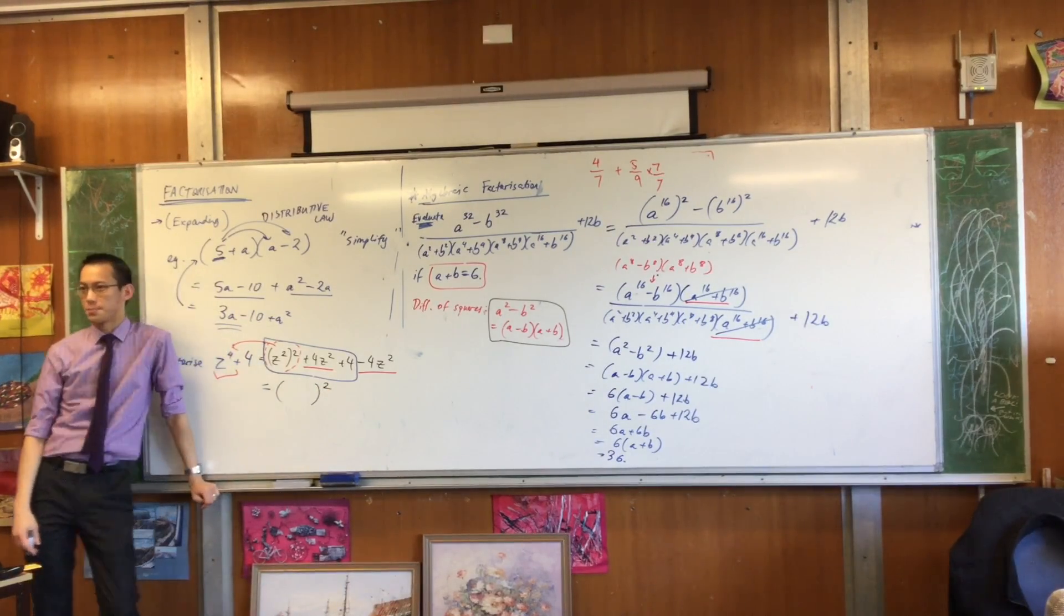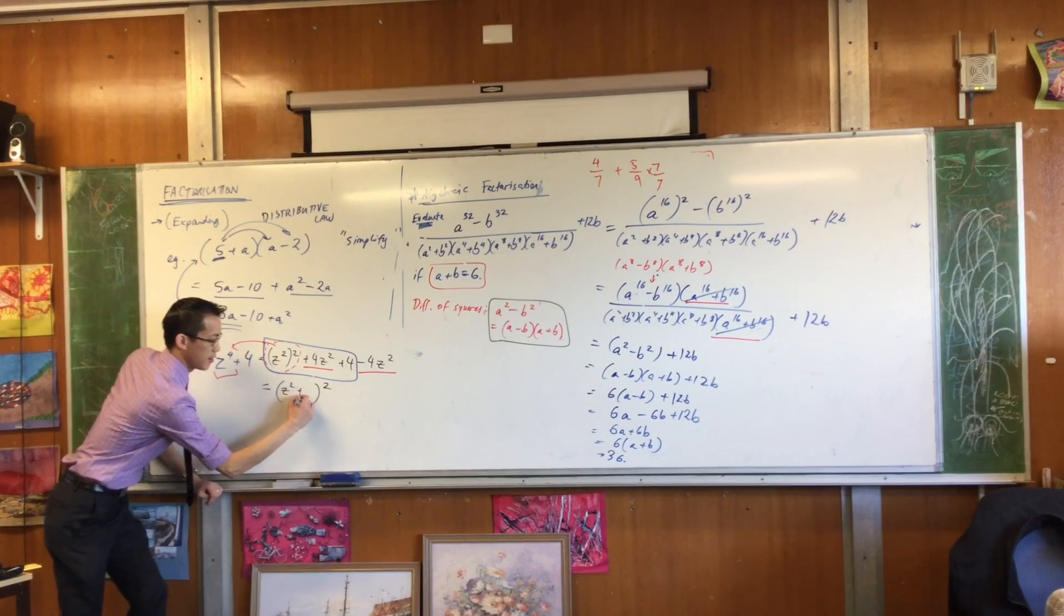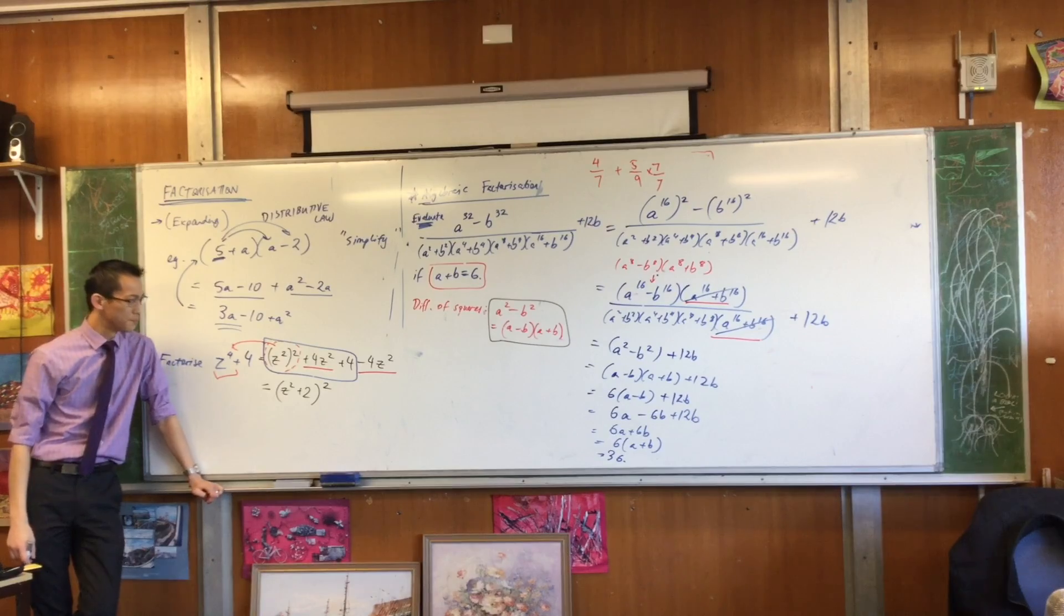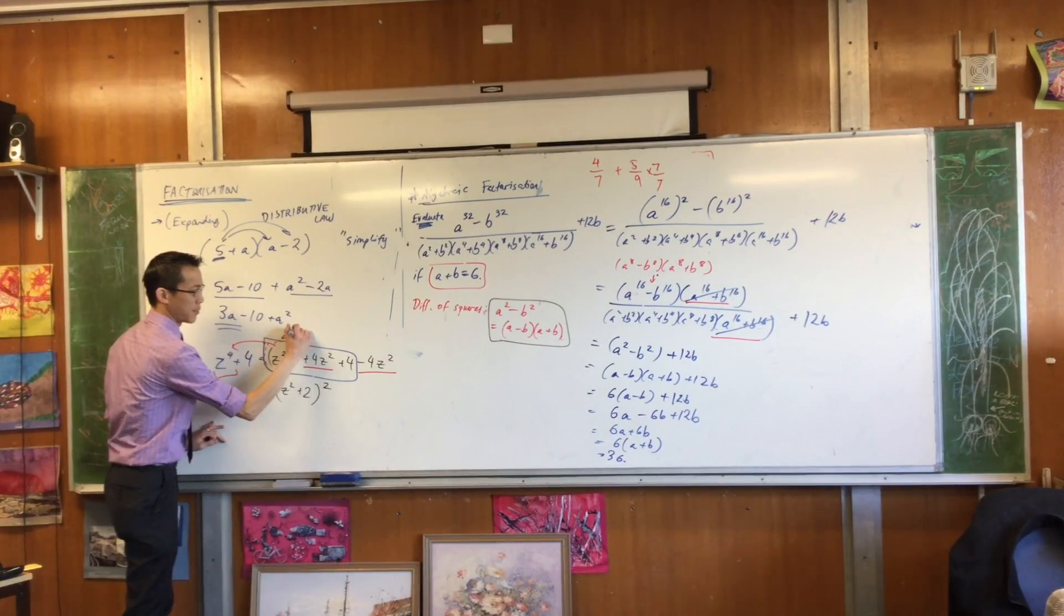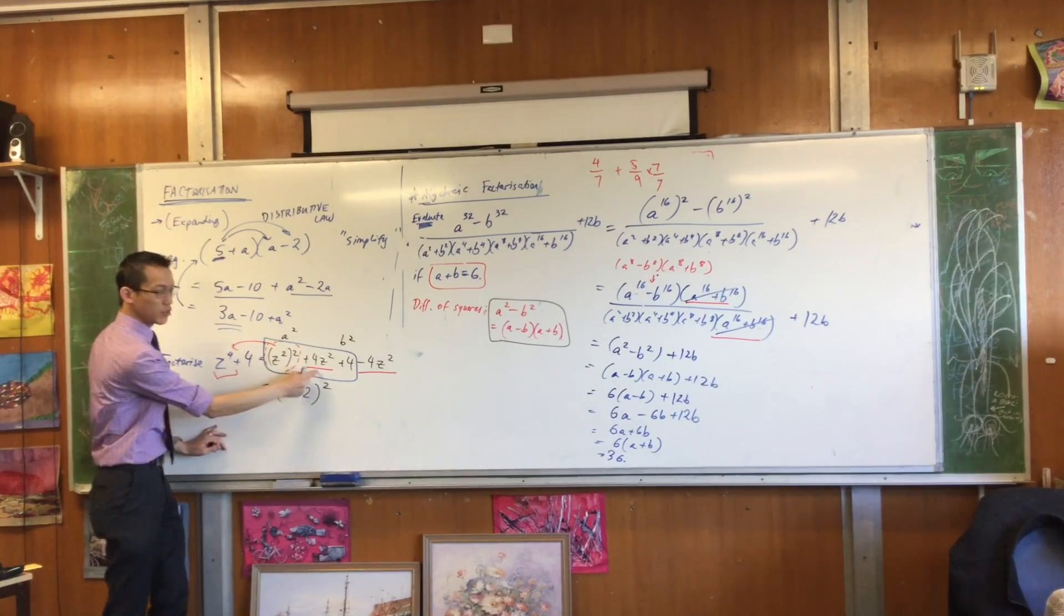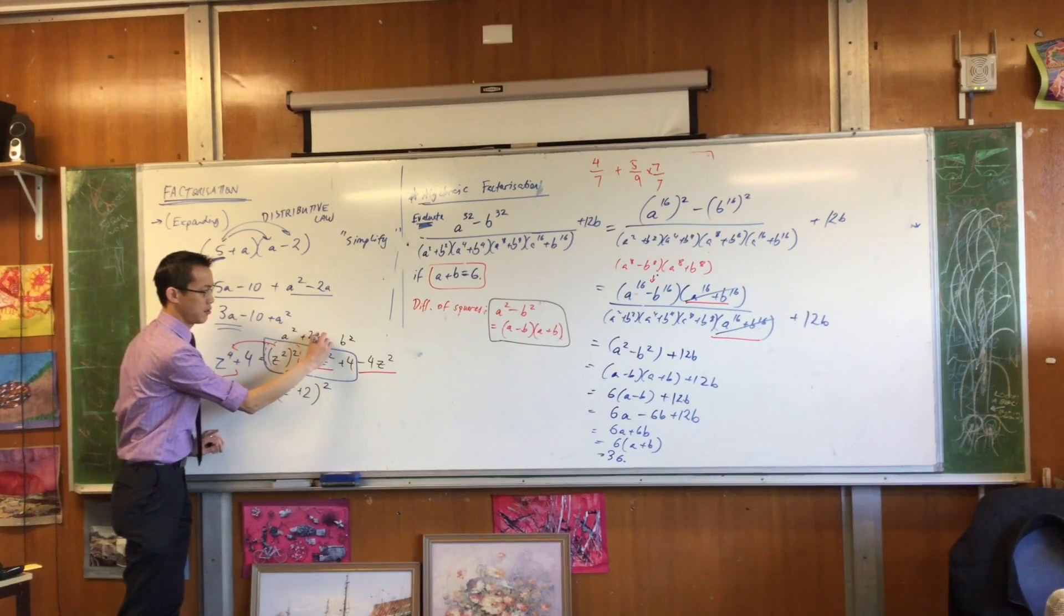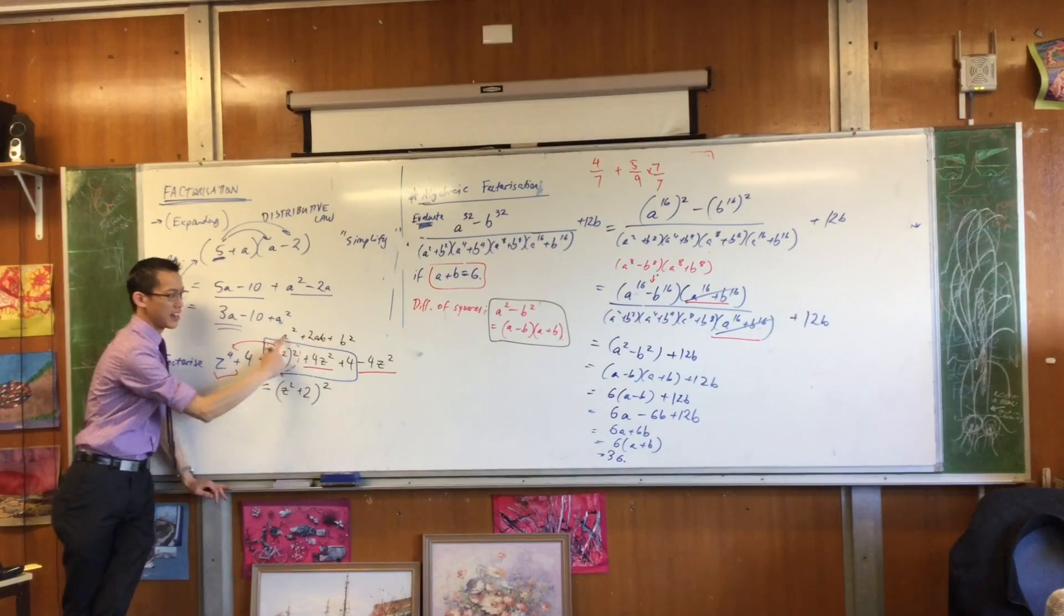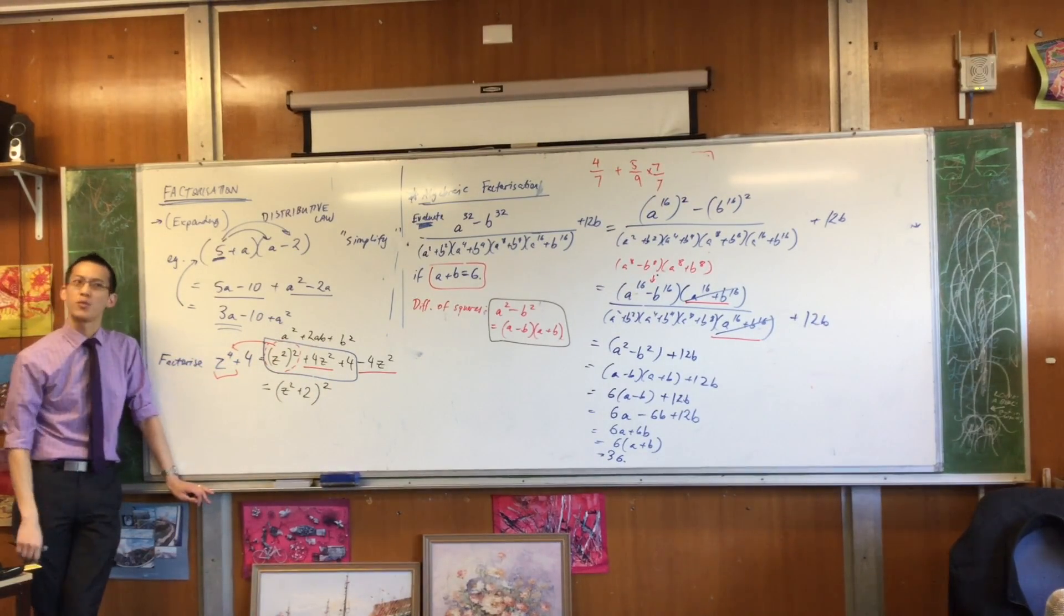This is a perfect square. It's something squared. What is the something? Yeah, z squared plus 2. So this guy up here is written in the form, something squared, something else squared, and nestled in the middle, you have plus 2ab. Now maybe you're not used to recognizing that kind of thing as a perfect square, but you'll get better at it with practice.